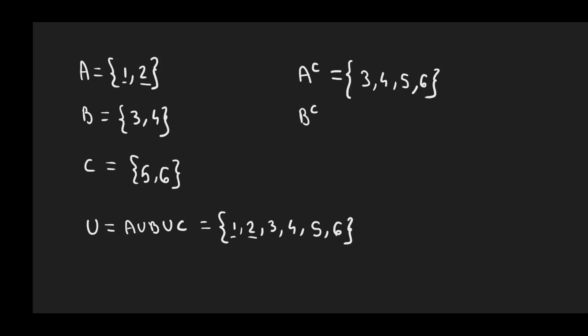So how can we find the complement of B? In order to find the complement of B, we have to remove from the universal set 3 and 4, which are found in B. So we remove 3 and 4, and we are left with 1, 2, 5 and 6. And for the complement of C, we remove 5 and 6, which are found in C, and we are left with 1, 2, 3 and 4.